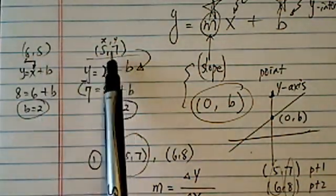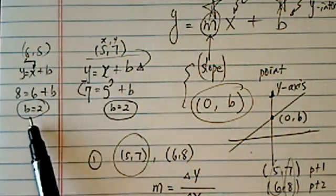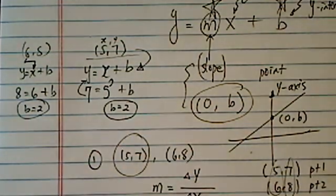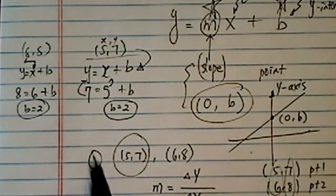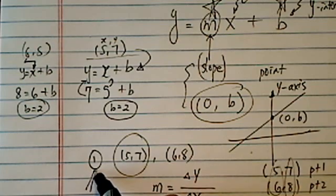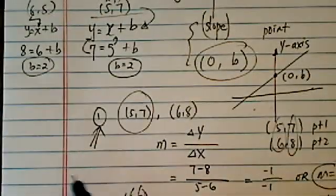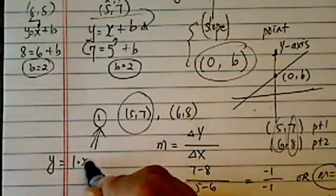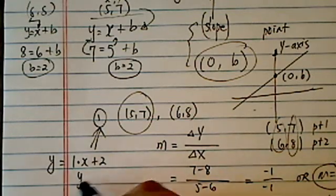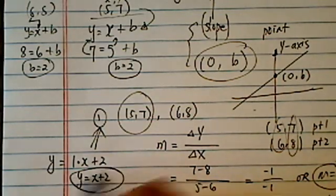So it doesn't matter which sibling pair you pick, the answer for b is always the same. Once you get m and b, you're set to go. So answer for our number 1 is y is equal to 1 times x plus 2, or y equal to x plus 2.